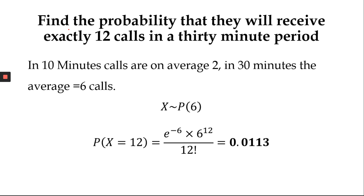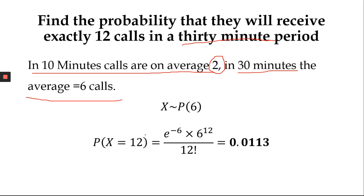Part (b): find the probability of exactly 12 calls in a 30-minute period. In 10 minutes we get on average 2 calls; so in 30 minutes — which contains three 10-minute intervals — Lambda becomes 2 times 3, which gives us on average 6 calls. Therefore X follows Poisson with Lambda equal to 6.